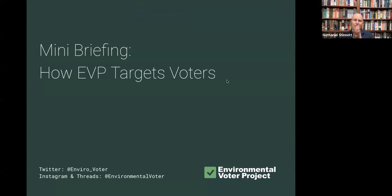So what we do at the Environmental Voter Project to target voters is we use what's called predictive modeling. Although the examples I'm going to provide are based on what we do at the Environmental Voter Project, this is the same way that modern, sophisticated political campaigns — like presidential campaigns, Senate, gubernatorials, and even some congressionals — use to target their voters. This isn't unique to us; this is how modern politics identifies voters.